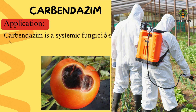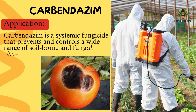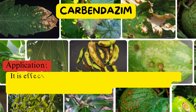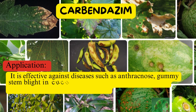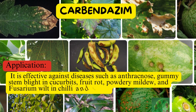Uses. Carbondazine is a systemic fungicide that prevents and controls a wide range of soil-borne and fungal diseases. It is effective against diseases such as anthracnose, gummy stem blight in cucurbits, fruit rot, powdery mildew, and fusarium wilt in chili and tomato.